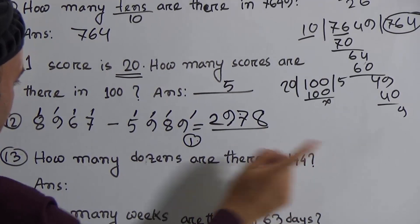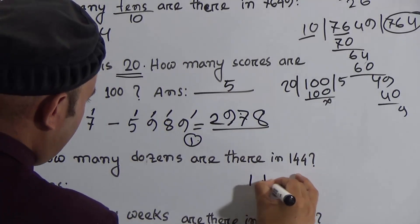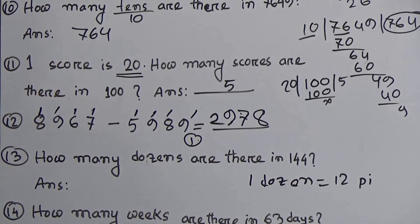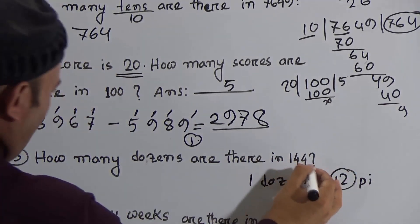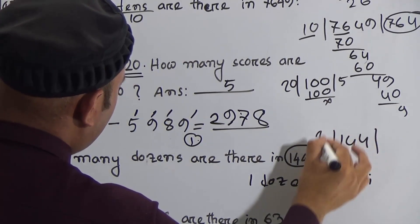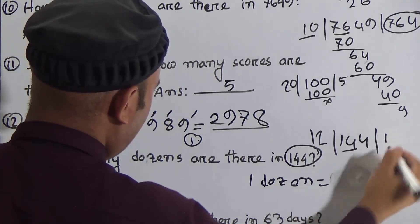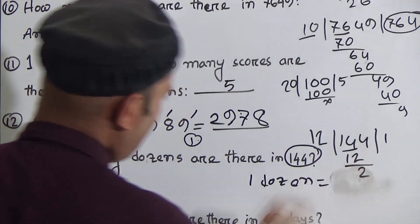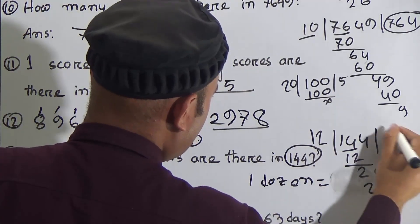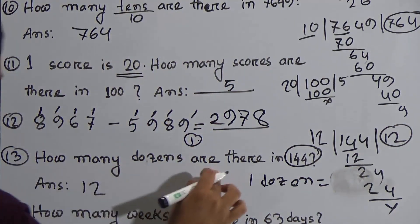Next: how many dozens are there in 144? You know that one dozen means 12 pieces. So you have to divide 144 by 12. 12 goes into 14 once (12), remainder 2; bring down 4 to get 24; 12 twos are 24. The answer is 12. So there are 12 dozens in 144.